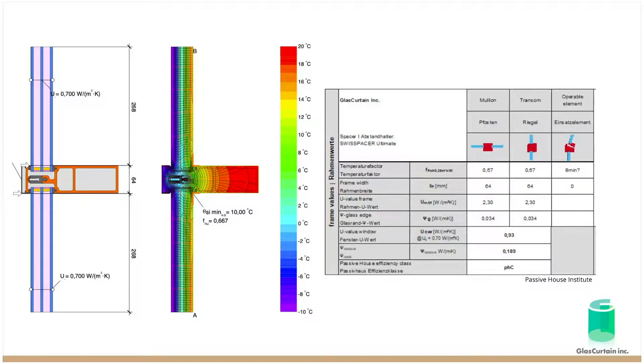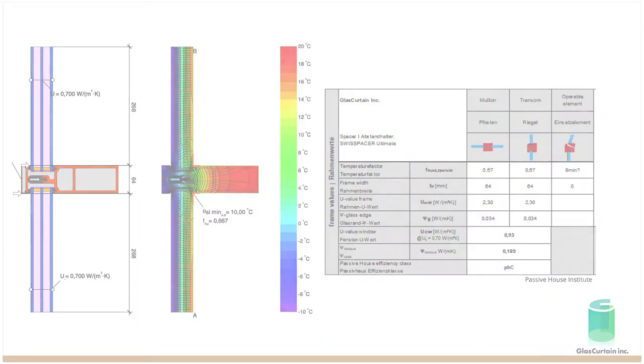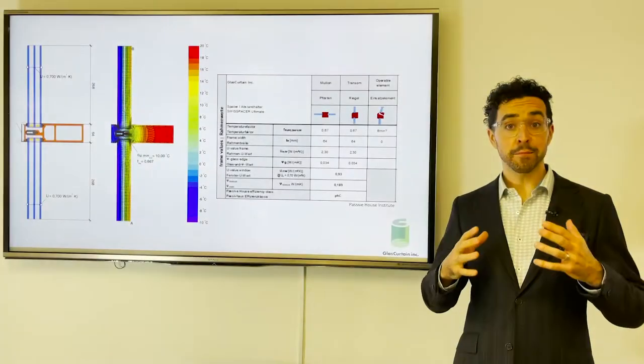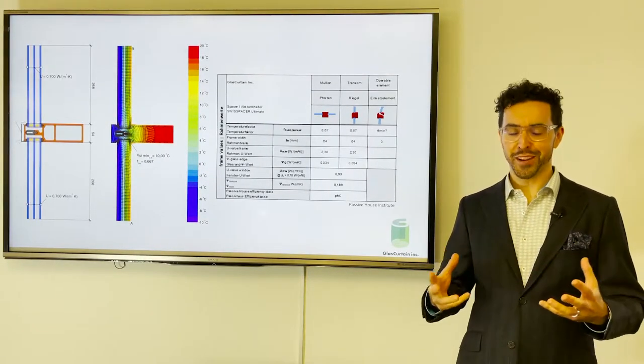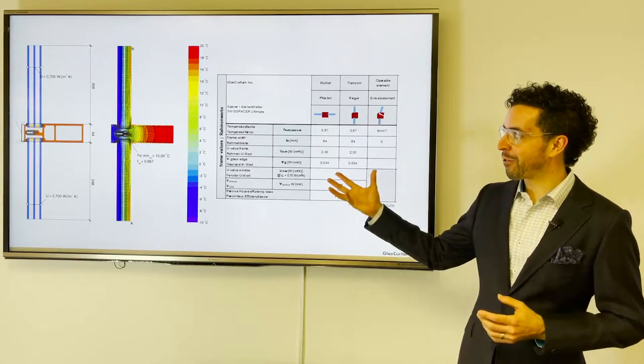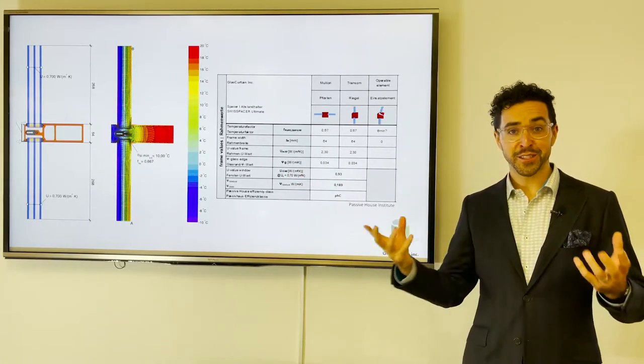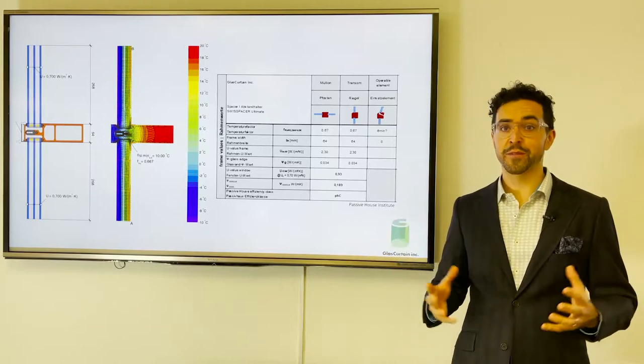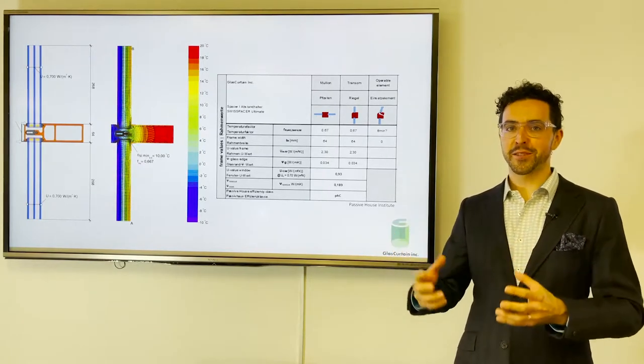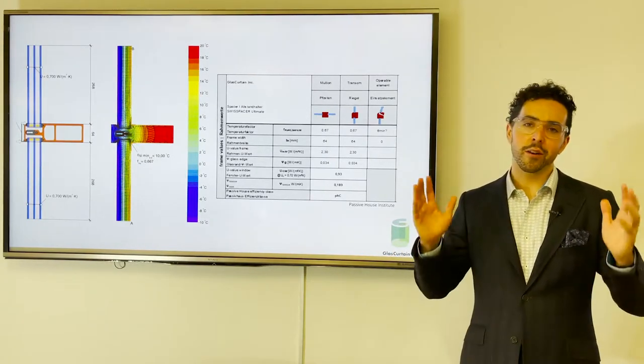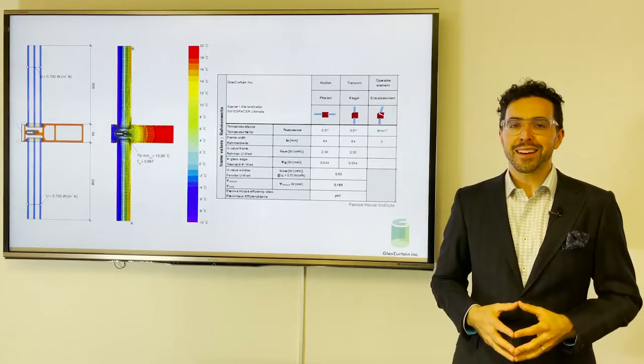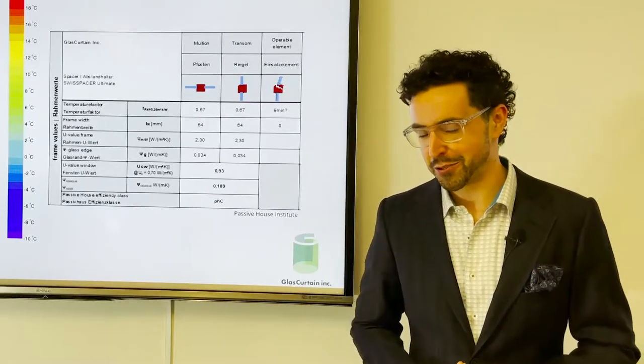What we have here is an example of not exactly a passive house certificate, but the results of passive house modeling, an attempted certification. So we took our standard mullion, our standard fiberglass Therm 134 Mullion. We took that to the passive house Institute in 2017. We thought, oh, we've got the best curtain wall in North America. How hard could it be to pass this German standard?